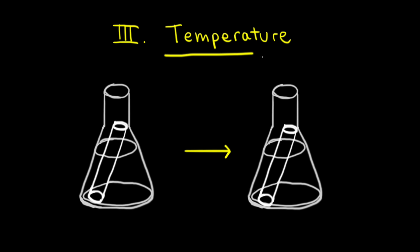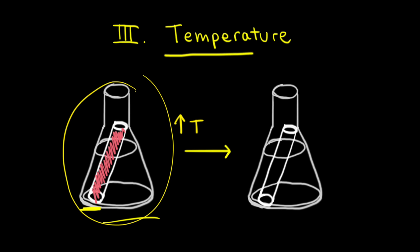Temperature is another factor that can affect the rate of a reaction. Let's say on the left we have a glow stick in a flask that contains some cold water, and the glow stick is already glowing. The glow from a glow stick comes from a chemical reaction. If we were to increase the temperature — say we heated this flask — we would observe the glow to get stronger, indicating a more vibrant glow from our glow stick. So increasing the temperature must have increased the rate of the reaction. The reason increasing temperature increases the rate of reaction is because the molecules are moving faster, and therefore the molecules are colliding with each other with greater frequency and with greater force, which increases the rate of the reaction.